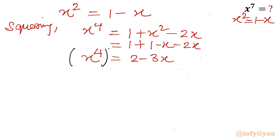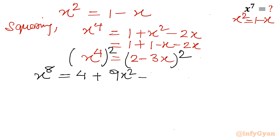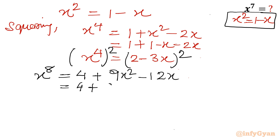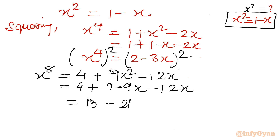To get x power 8, square x⁴ = 2 − 3x. So x⁸ = (2 − 3x)² = 4 + 9x² − 12x. Substituting x² = 1 − x: x⁸ = 4 + 9(1 − x) − 12x = 4 + 9 − 9x − 12x = 13 − 21x. This is the value of x power 8.